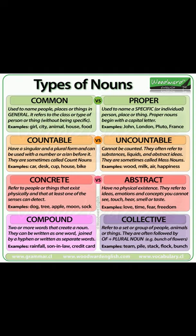Countable Nouns. Countable nouns are nouns that can be counted. They have a singular and a plural form, and can be used with a number. Examples of countable nouns: bus, table, fork, shed, ear, bird.